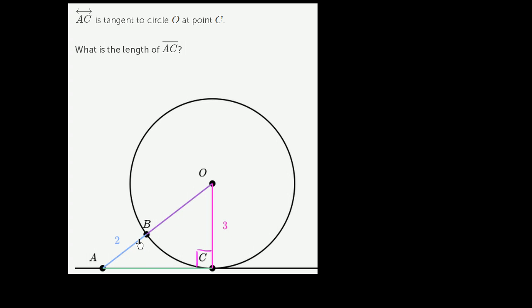But the thing that might jump out is that OB is a radius. It's going to be the same length as any radius. So this is going to be three as well. It's the distance between the center of the circle and a point on the circle, just like the distance between O and C.